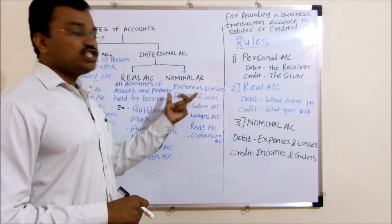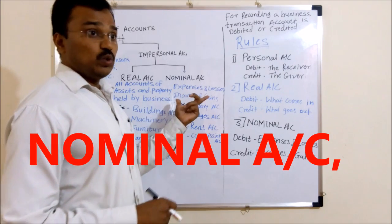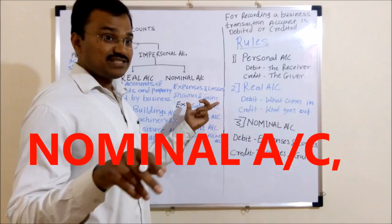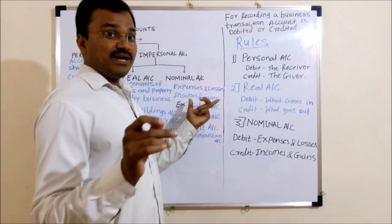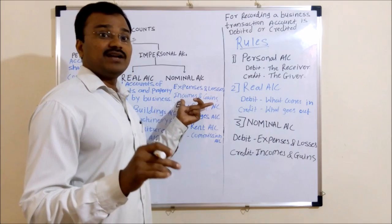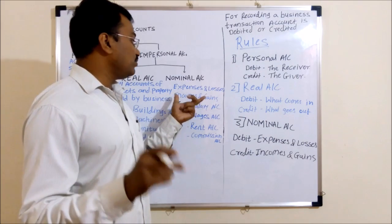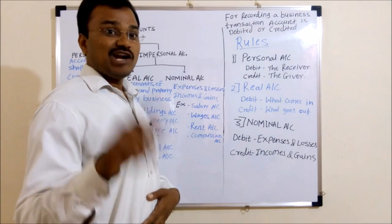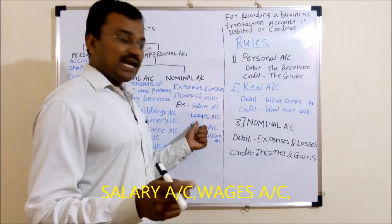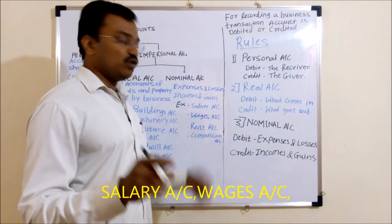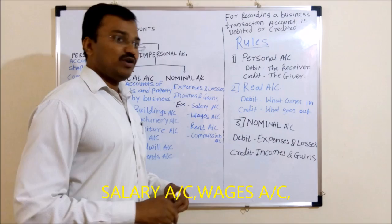Second type in impersonal account is nominal account. Nominal account includes expenses and losses, and incomes and gains. For example, salary account, wages account, rent account, commission account. These are the examples of nominal account.